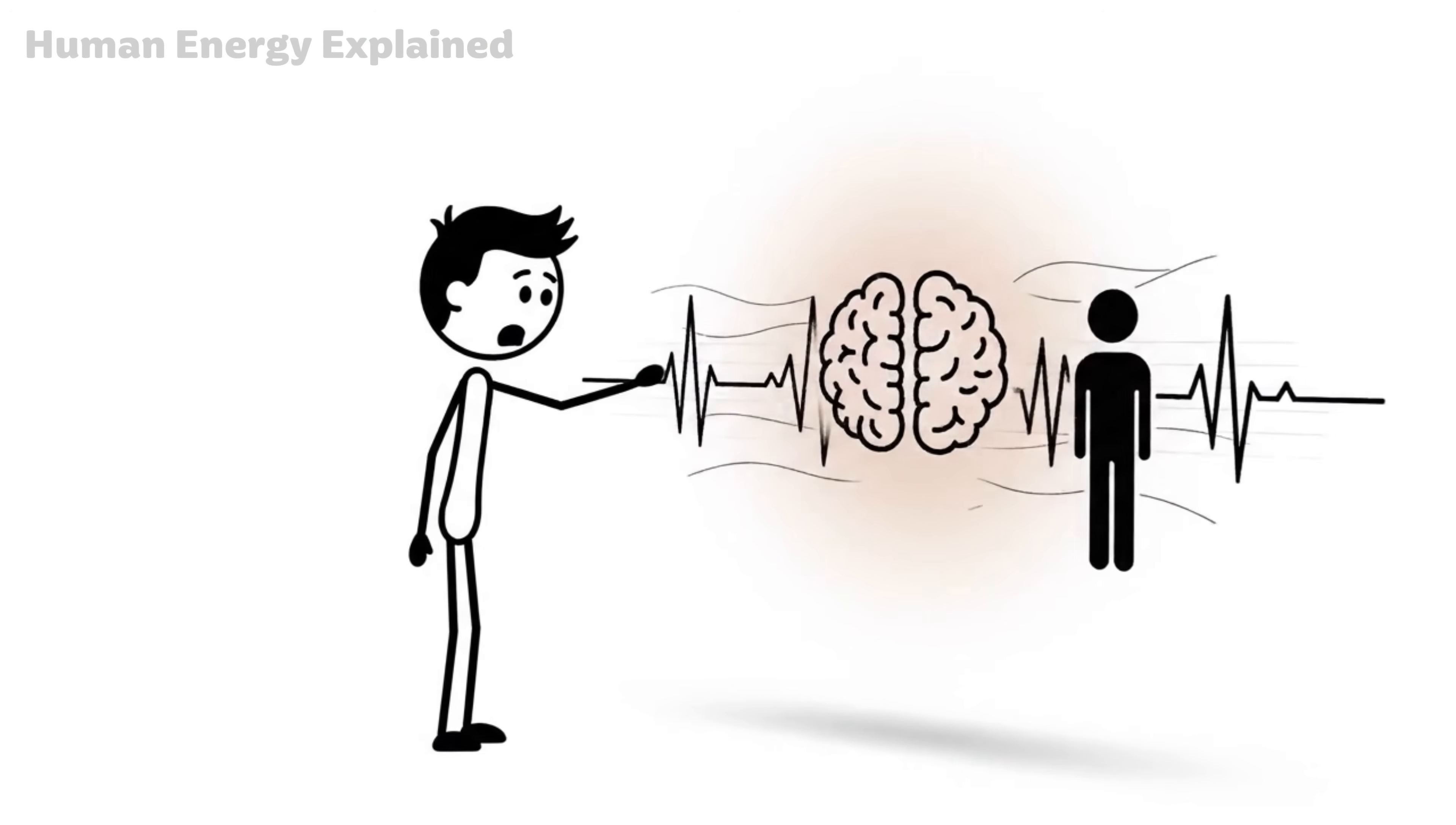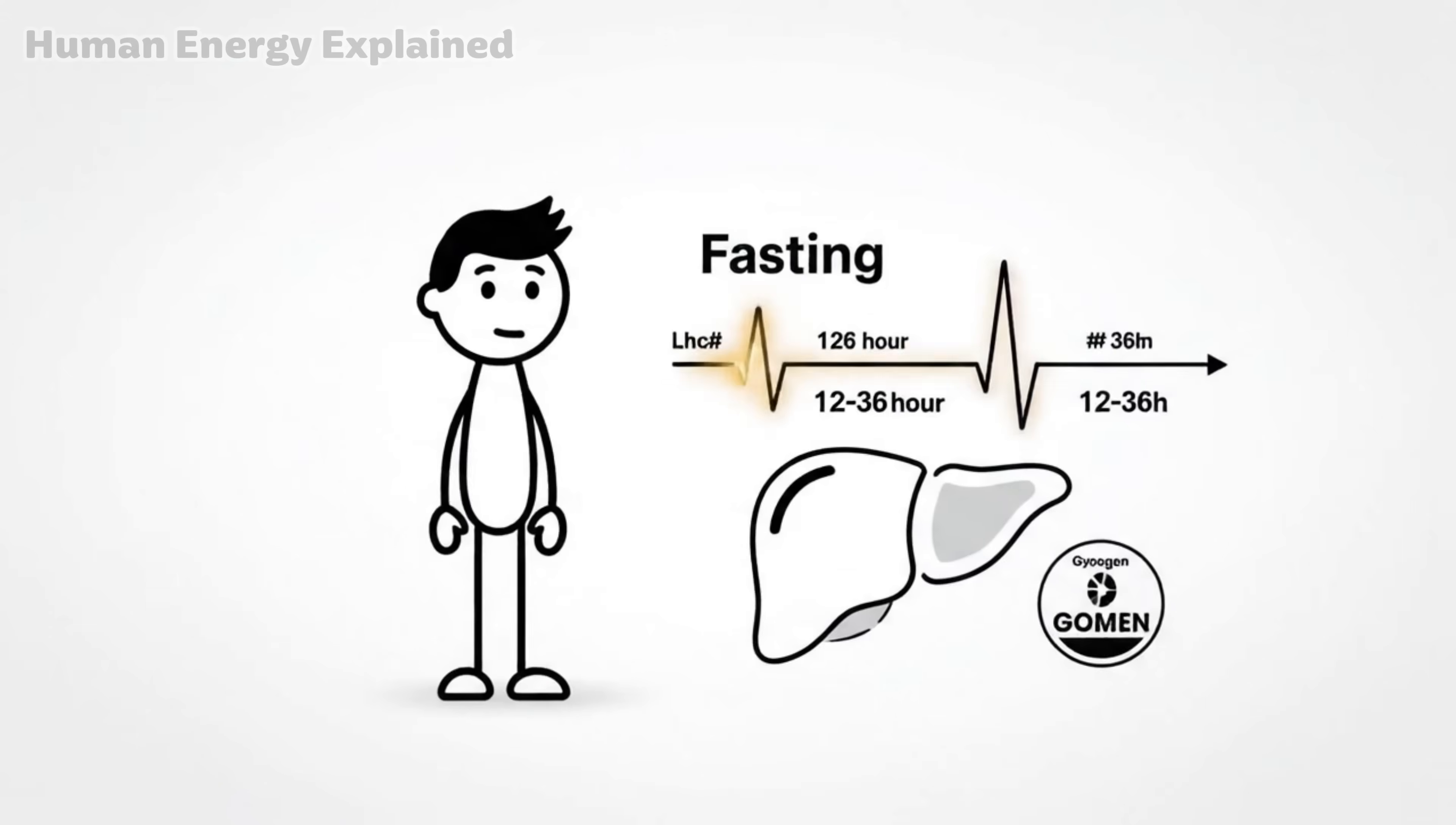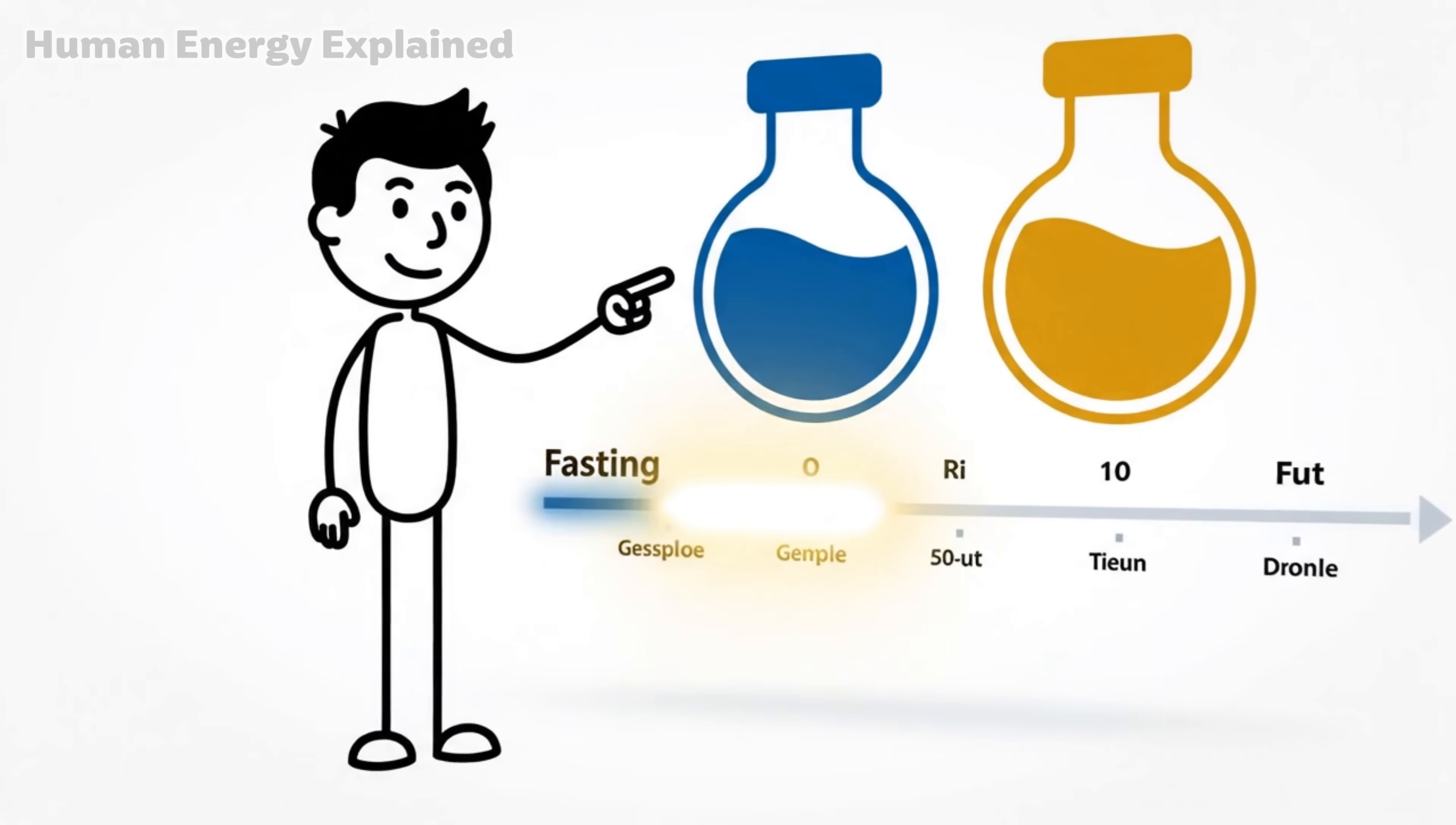Dr. Mark Mattson, a neuroscientist at Johns Hopkins University, has studied intermittent fasting for over 25 years. His research team coined the term 'metabolic switch' to describe this exact moment when your body transitions from burning glucose to burning fat. In a landmark paper, Mattson and his colleagues showed that this switch typically occurs between 12 and 36 hours after your last meal, depending on how much glycogen your liver had stored. For most people eating a standard diet, it happens somewhere around the 12 to 16 hour mark.